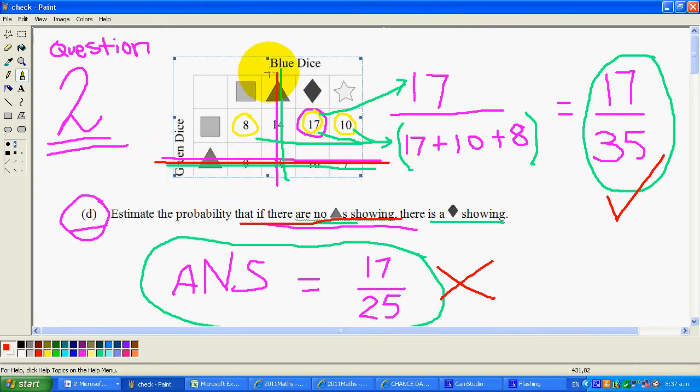So that means no triangles—we're through there—that there is a diamond showing. So here's the diamond showing.